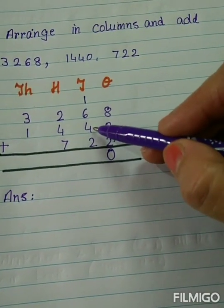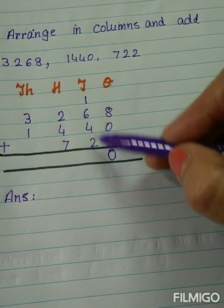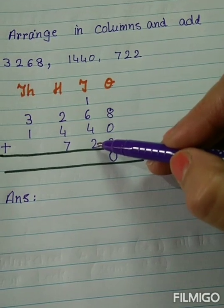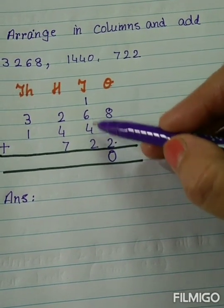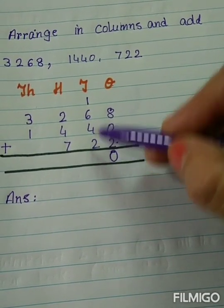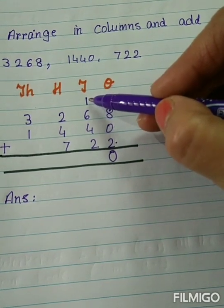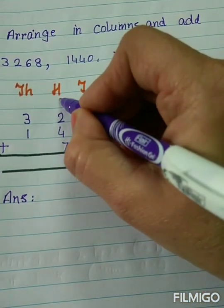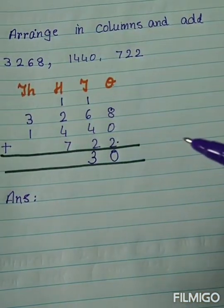6 plus 4. Now we are adding the tens place. 6 plus 4, 10. 10 plus 2, how much is it? 10 plus 2? 12. And 12 plus 1 carry over. Here we have 13. Again carry over to hundreds place.